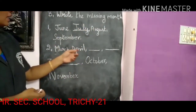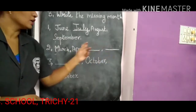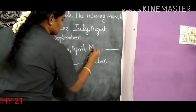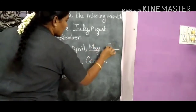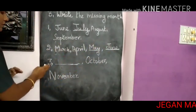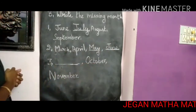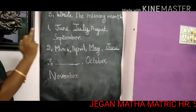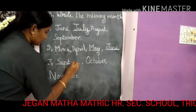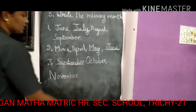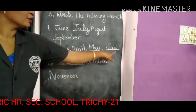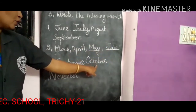Number two: March, April, ___, ___. After April comes May, and after May comes June. So the answers are May and June. Number three: ___, October, November. What comes before October? September. So the answer is September. Let's check: June, July, August, September — correct. March, April, May, June — correct. September, October, November — correct.